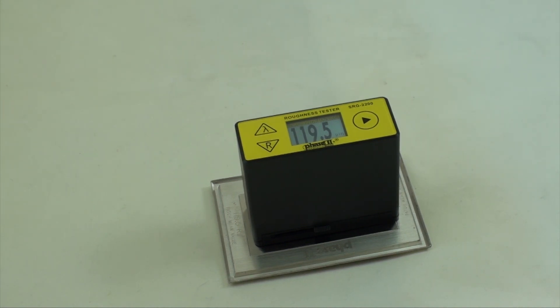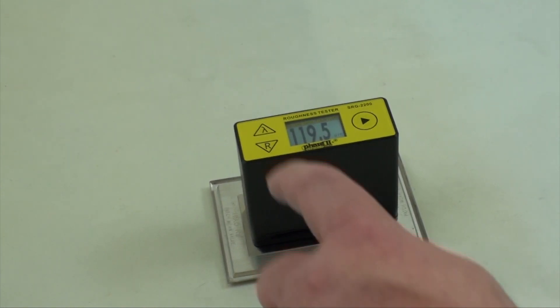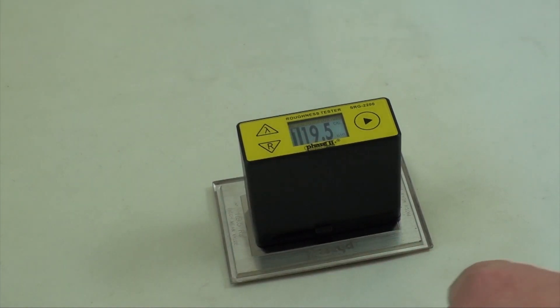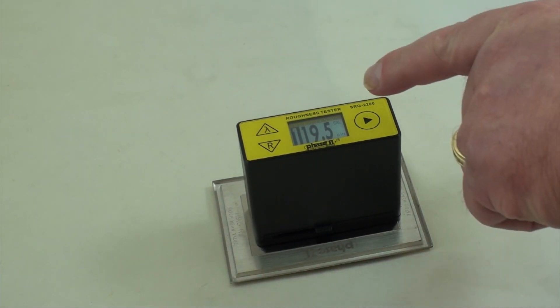To calibrate, press and hold the R button for four seconds. The display will show CAL in the top right of the screen.